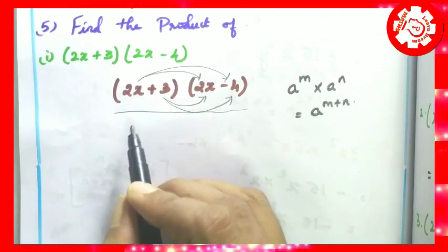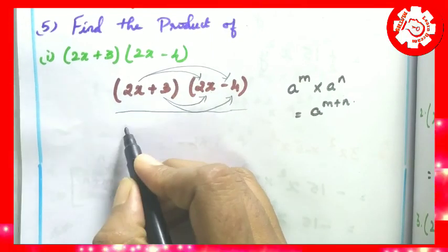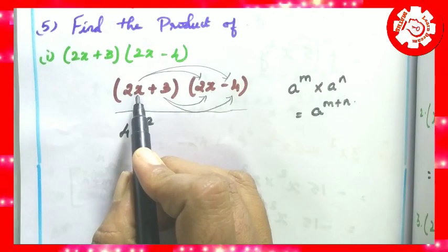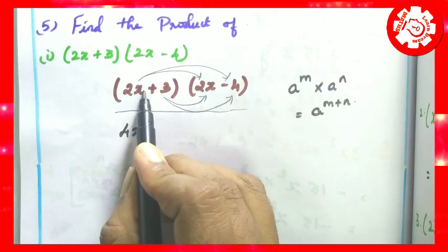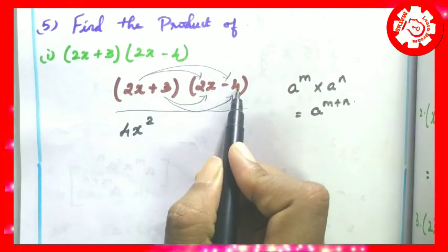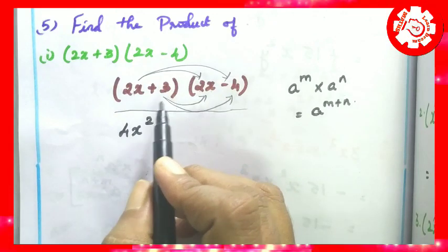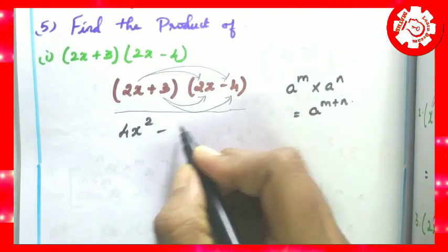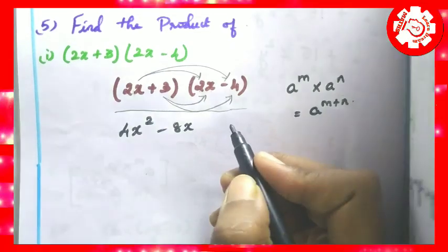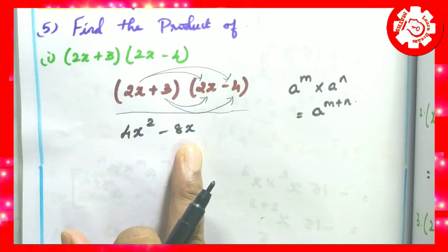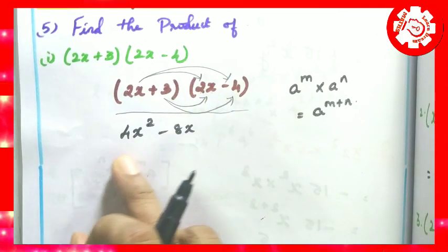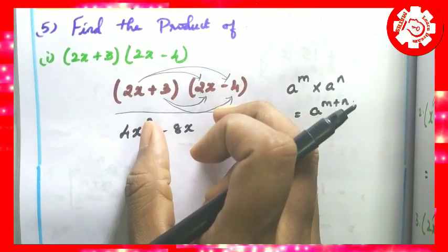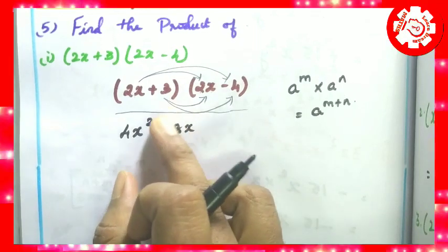We will multiply using the rule. First: plus into plus is plus. 2 times 2 is 4, x into x is x squared. First term with first term complete. Then first with second, then second with first. Second with second. Plus into minus is minus. 2 times 4 is 8, and the variable is x.